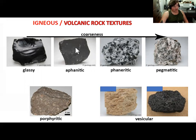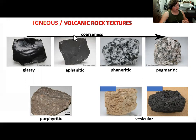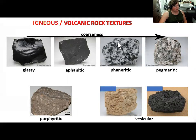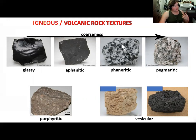For igneous rocks that take a bit more time to cool, you will still get some crystals, but they'll be really tiny so the rock surface looks smooth — those are known as aphanitic or fine-grained igneous rocks. Coarse-grained or phaneritic igneous rocks have crystals that are actually visible — you can tell apart the black mineral from the white mineral and see individual crystal faces with a hand lens. Occasionally you get really large crystals, known as a pegmatitic texture.